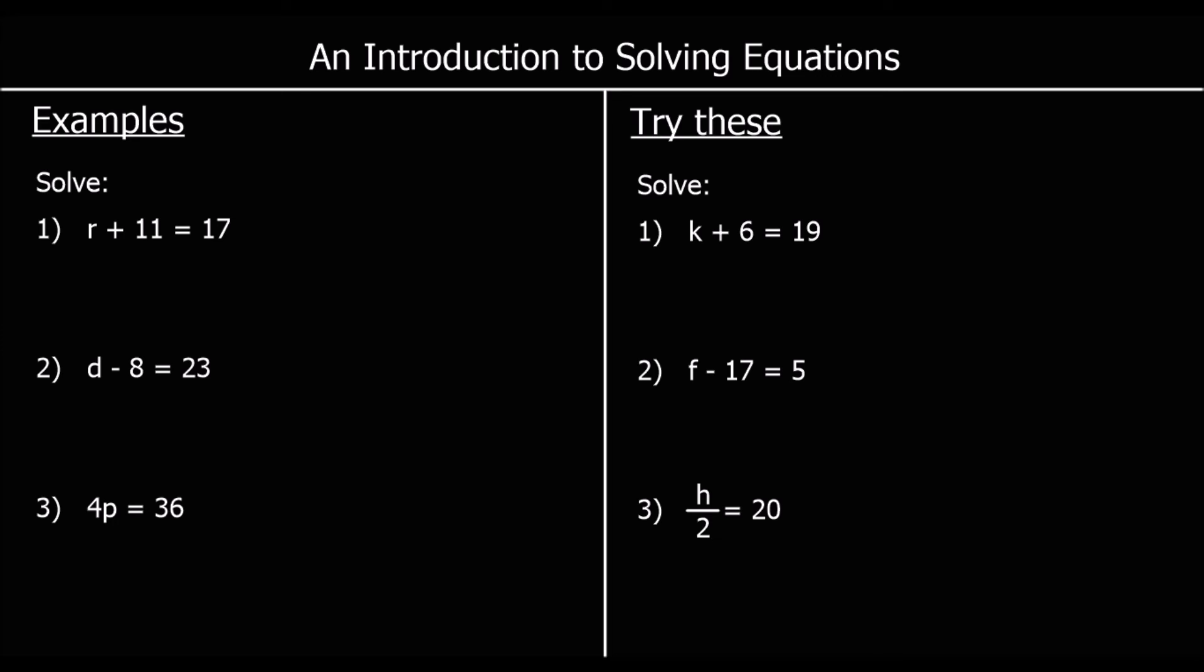Solving equations. An equation tells us that two things are equal. So in the first one, we've got R plus 11 is equal to 17. To solve the equation, we find out what the unknown number is. So R in the first question. Because both sides of the equation are equal, if we do the same thing to both sides, it stays equal. So I can take 11 away from both sides and the equation will stay equal. And the reason I'm taking 11 away is to get R by itself. So the opposite of adding 11 is taking away 11. So that tells me that R is 17 take away 11, which is 6.